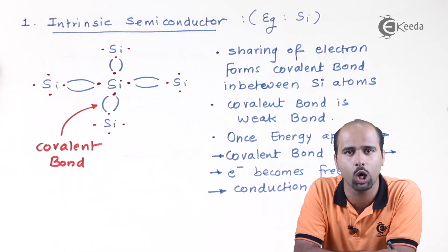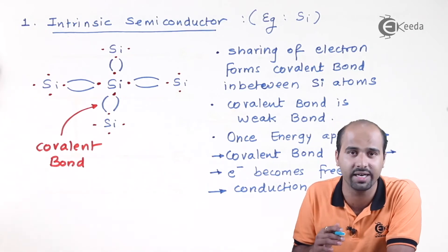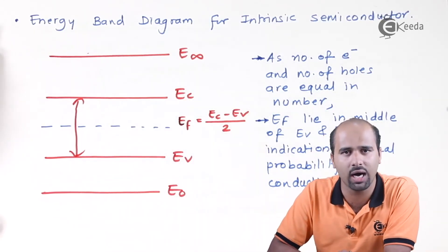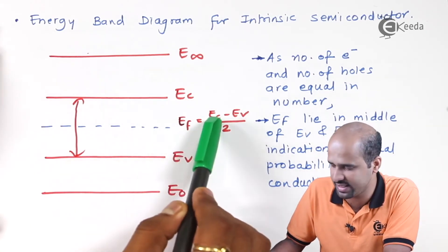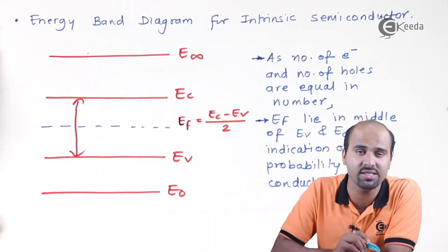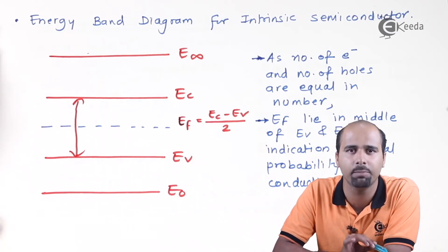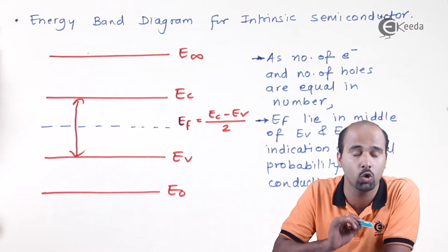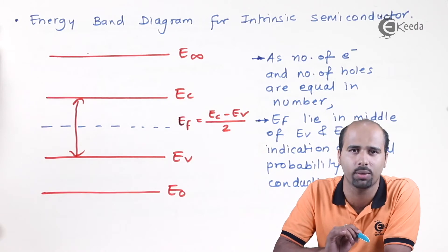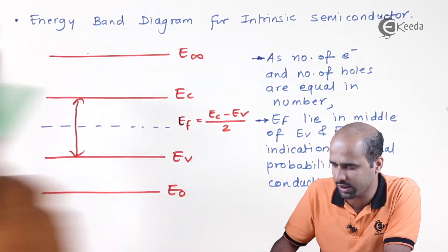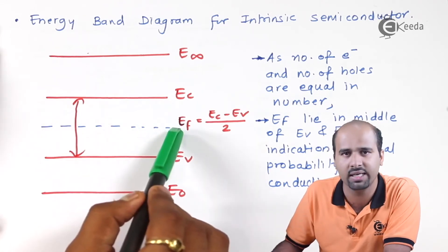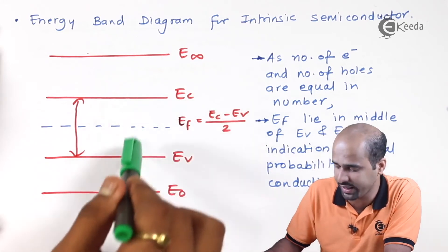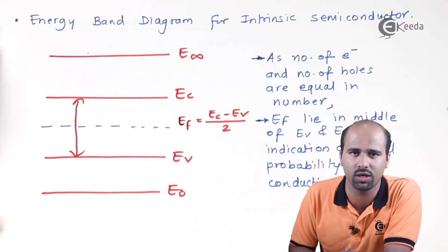Now we will focus on the energy band diagram of intrinsic semiconductors. The key quantity is the Fermi level EF, which equals (EC minus EV) divided by 2. In a pure intrinsic semiconductor, the number of electrons equals the number of holes — for example, 100 electrons and 100 holes. So the probability of electrons moving from the valence band to the conduction band lies exactly between EC and EV. Therefore, EF is at the midpoint: EF = (EC − EV) / 2.